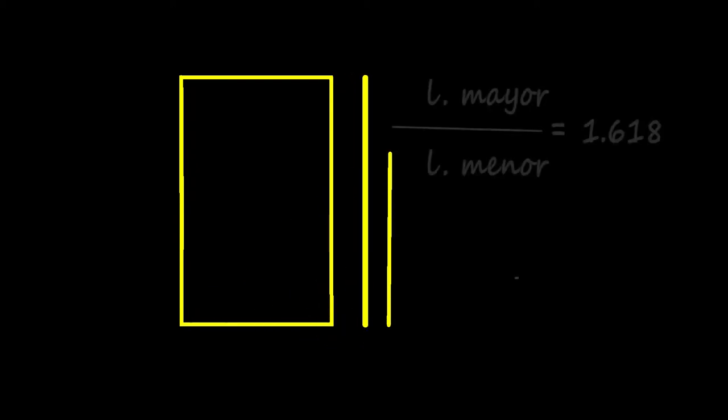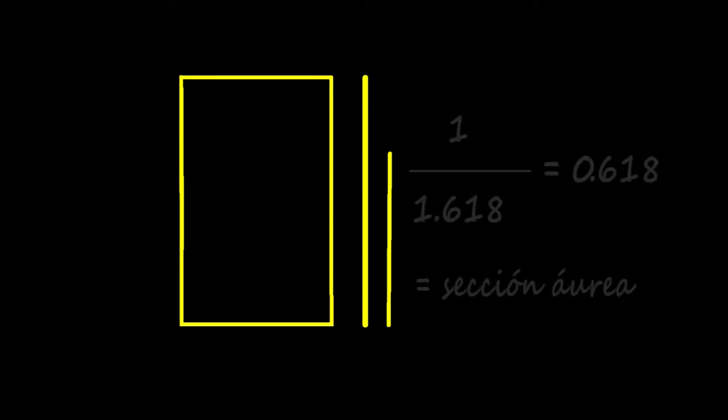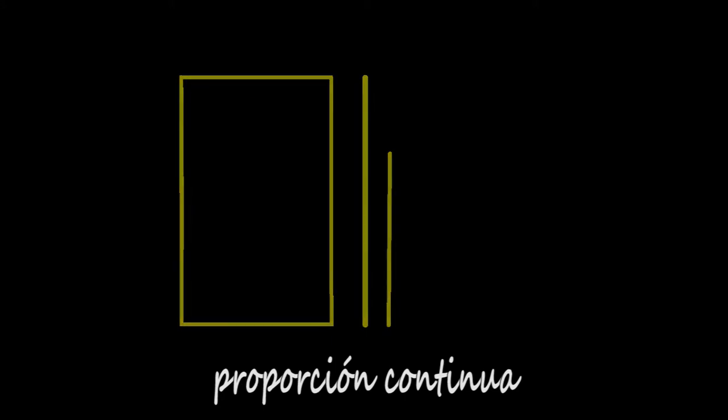Si dividimos la longitud del lado mayor entre la del lado menor, se obtiene un cociente de 1,618. Y esta cifra sirve para establecer la ratio 1 a 1,618, cuyo cociente es 0,618. Y los tres términos del rectángulo que produce constituyen una proporción continua.